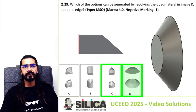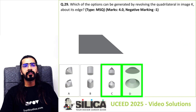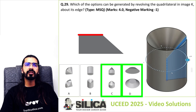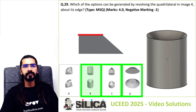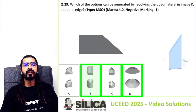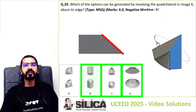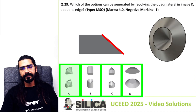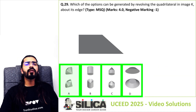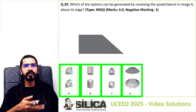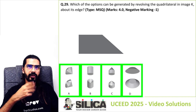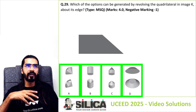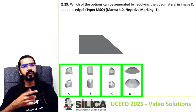Revolving around the next edge gives option B, and revolving around the last edge gives option A. So all four options — A, B, C, and D — are correct answers. If you are having trouble visualizing how this is going to be rotated and look in 3D, here is a tip.